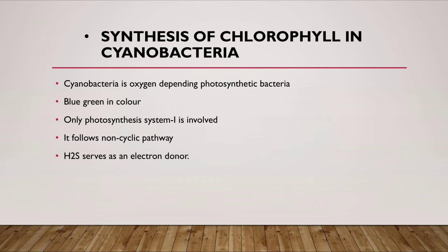Next we see synthesis of chlorophyll in cyanobacteria. Cyanobacteria is an oxygen-dependent photosynthetic bacteria that is blue-green in color. Only photosynthesis system I is involved. It follows non-cyclic pathway, doesn't follow cyclic pathway. Hydrogen sulfide serves as an electron donor.